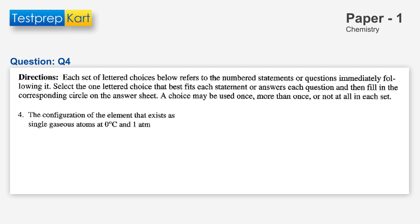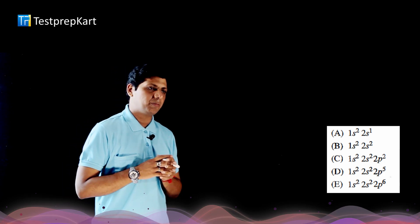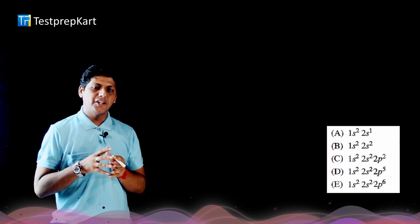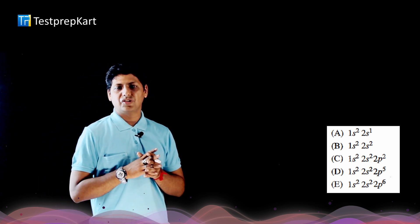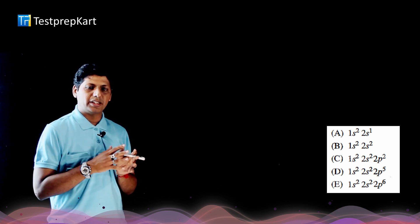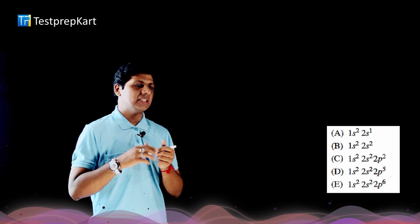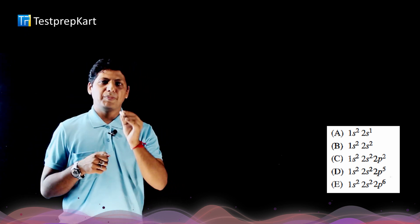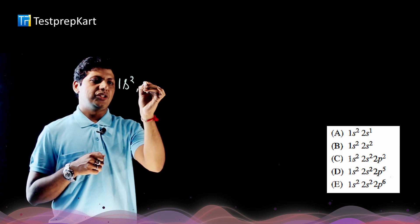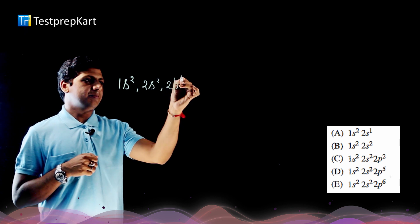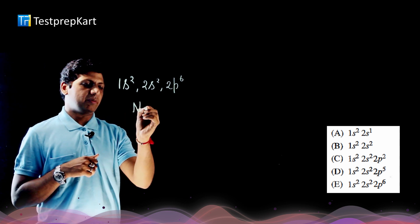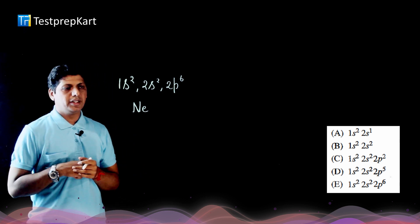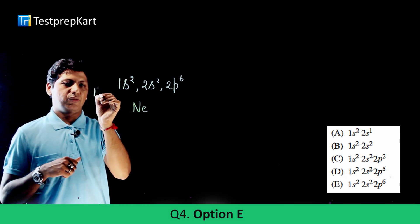Question 4 asks for the configuration of the element that exists as a single gaseous atom at 0°C and 1 atmospheric pressure. While most gases exist in diatomic form, only inert gases remain monoatomic at standard temperature and pressure. Option E, 1s²2s²2p⁶, is the electronic configuration of an inert gas — specifically neon. So option E is correct for question 4.